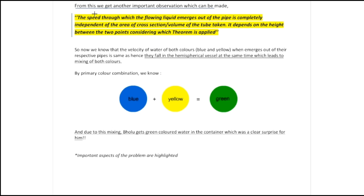So the speed v1 and v2 at which liquid emerges is completely independent of the area of cross-section. Where Bholu went wrong is that he kept the area of cross-section different for each pipe thinking velocity would be different, but v1 equals v2 since it just depends on the height h between the two reference points — P to Q and P-dash to Q-dash both had height h. So they fall simultaneously into the vessel and mixing takes place.